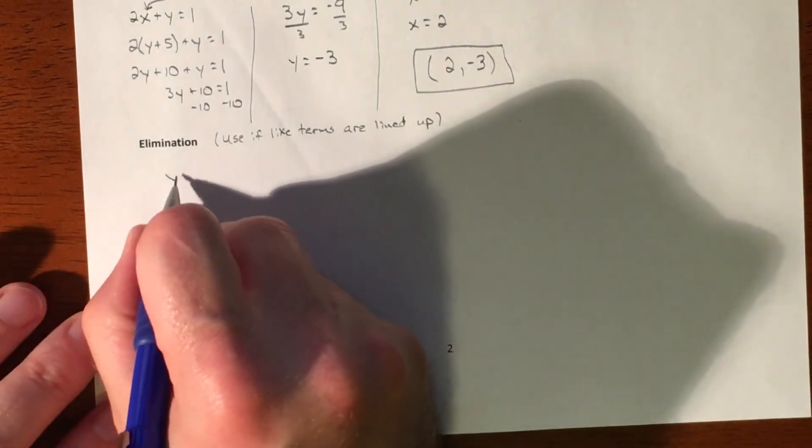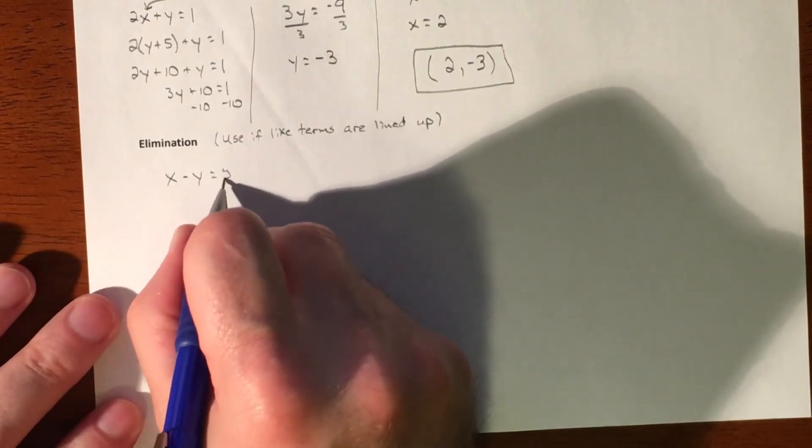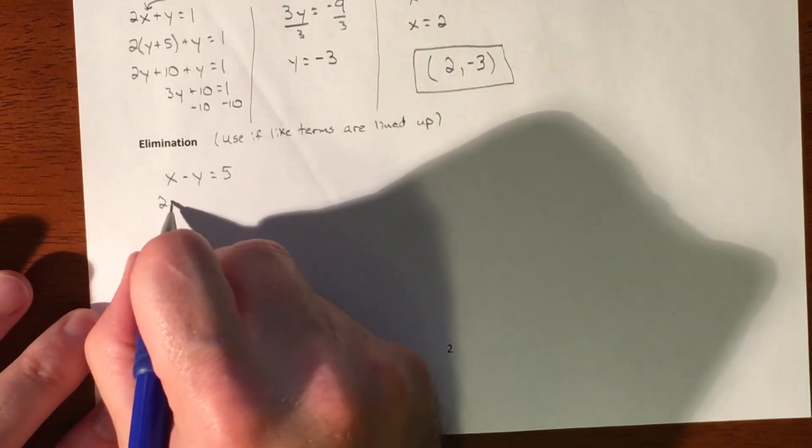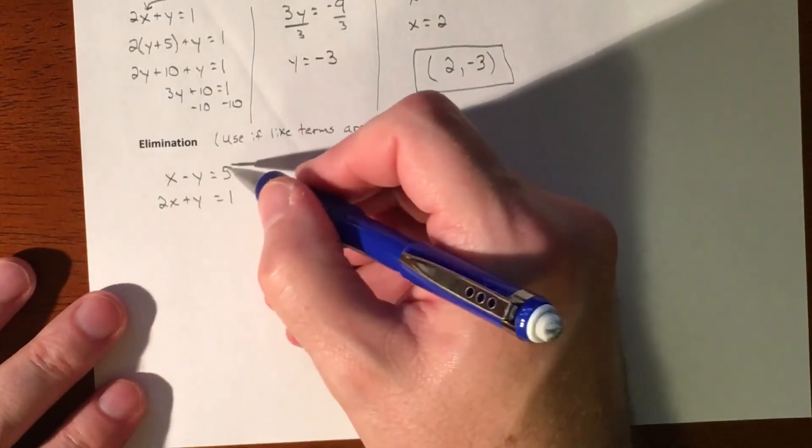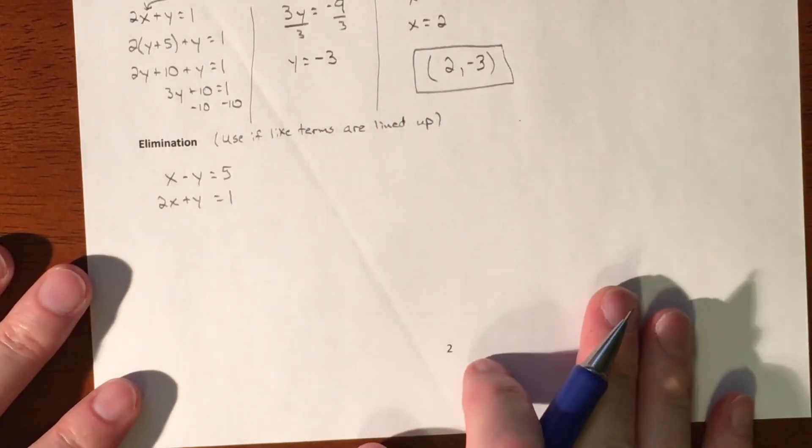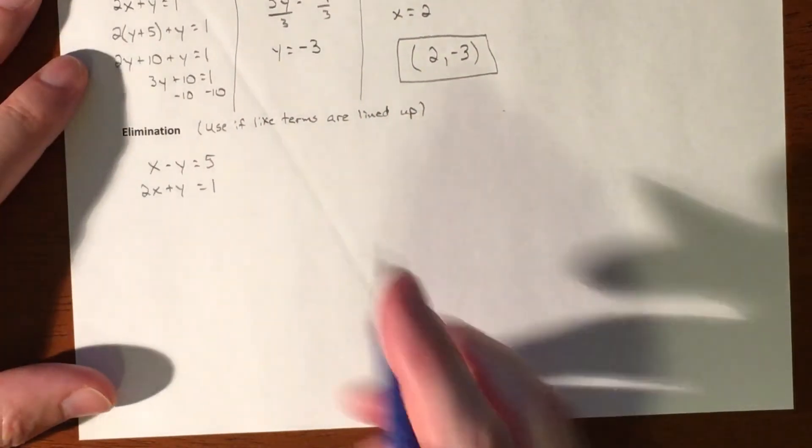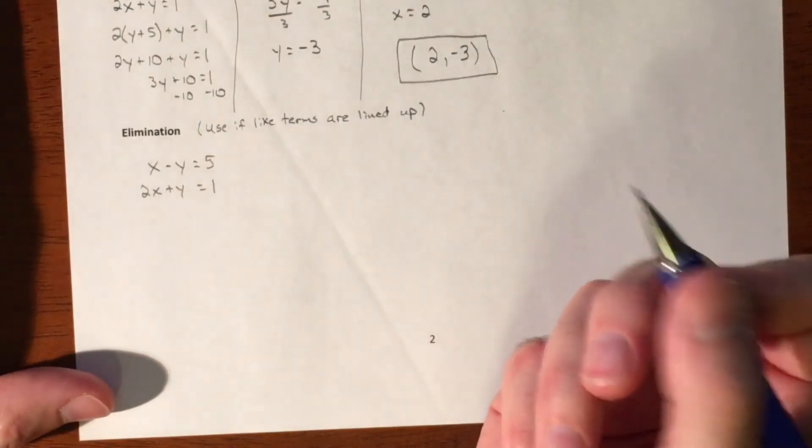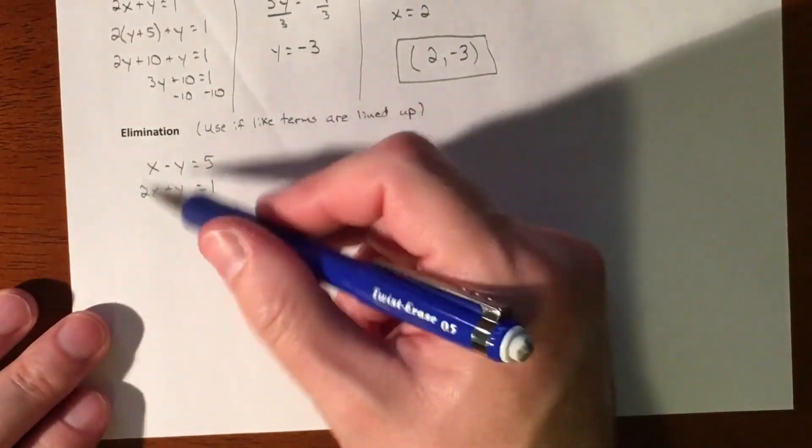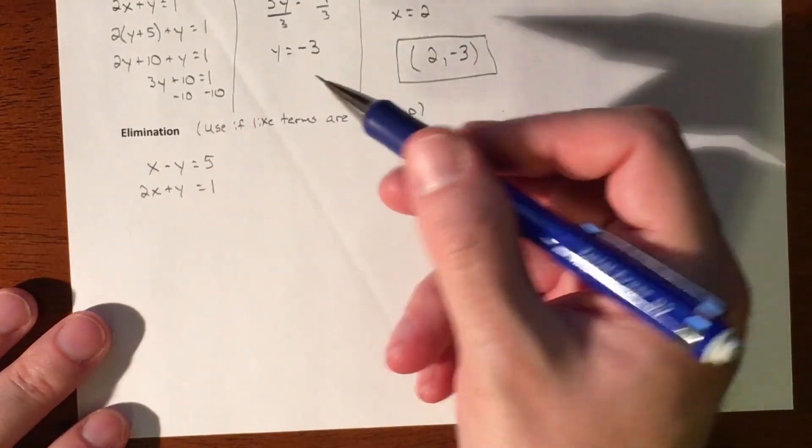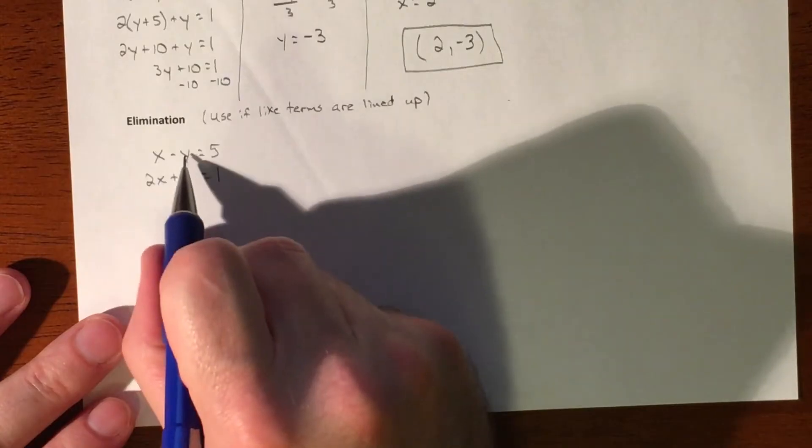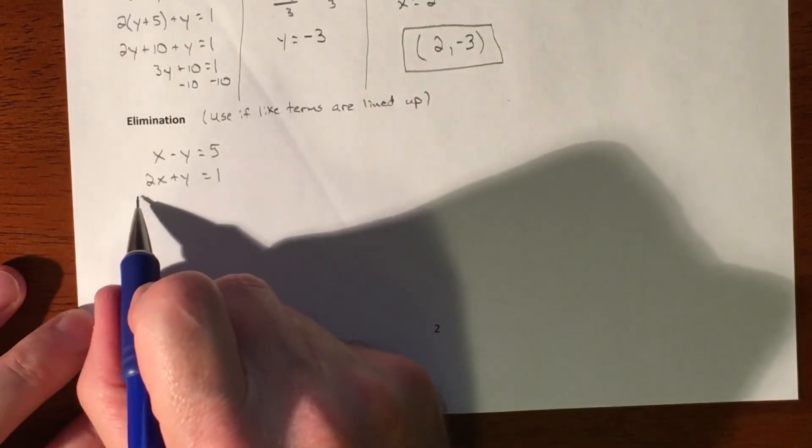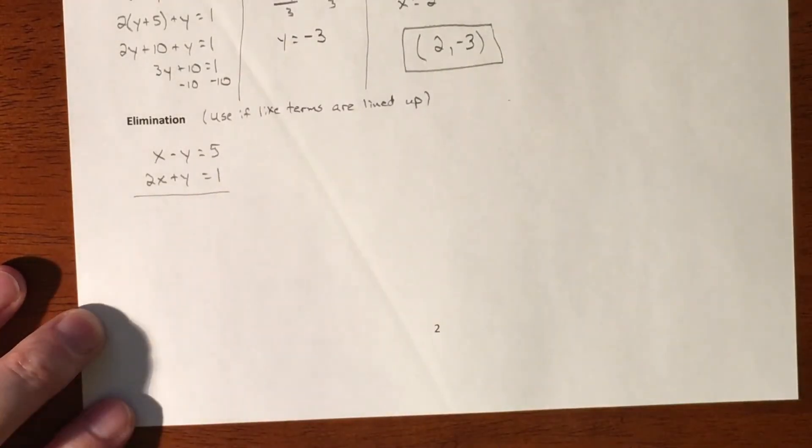So you're looking at x minus y equaling 5 and 2x plus y equals 1. So everything's wonderfully lined up. You got your x's lined up, you got your y's lined up, and you got your constants lined up. So we're actually just going to combine the equations. This problem doesn't do a great job of really showing you how you have to use elimination because you're just combining your like terms. But your goal is to eliminate a variable. Well, the y's already eliminate when you add them together. That's not normal.